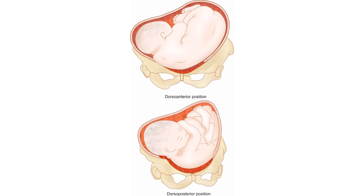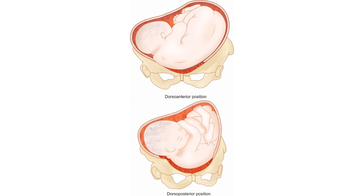Depending on whether the position of the fetal scapula is anterior, posterior, superior, or inferior, the following positions are possible: Dorsal Anterior Position — the most common position, where the fetal scapula lies anteriorly; Dorsal Posterior Position — the fetal scapula lies posteriorly; Dorsal Superior Position — the fetal scapula is directed superiorly. Depending on the position of the fetal head, the fetal position can be described as right or left.